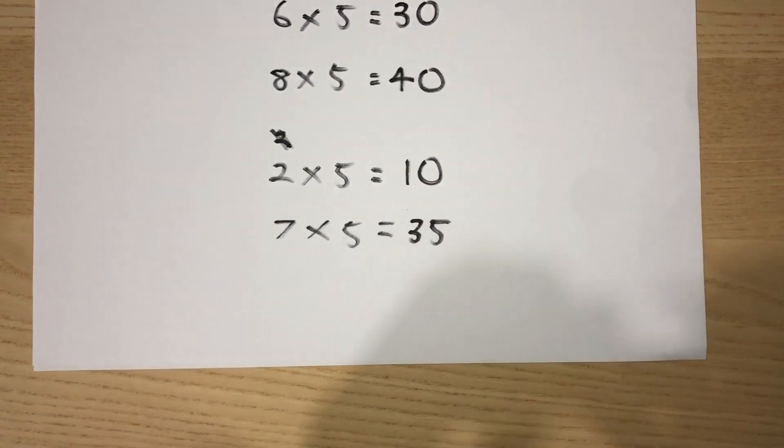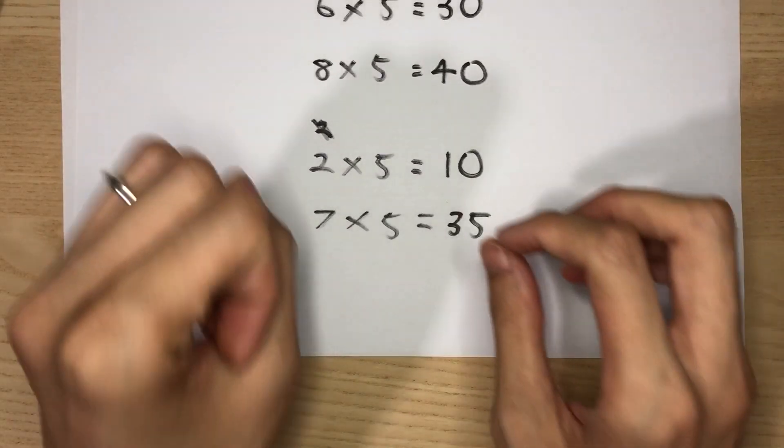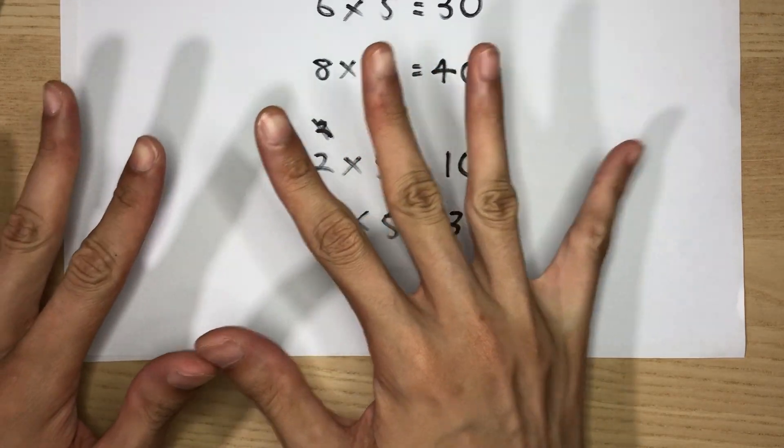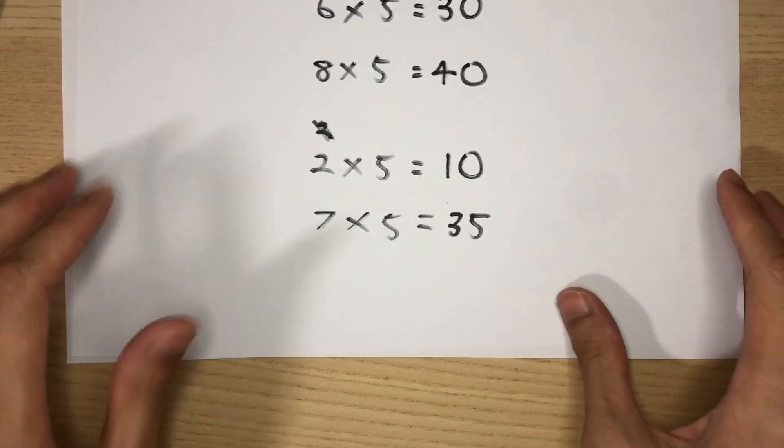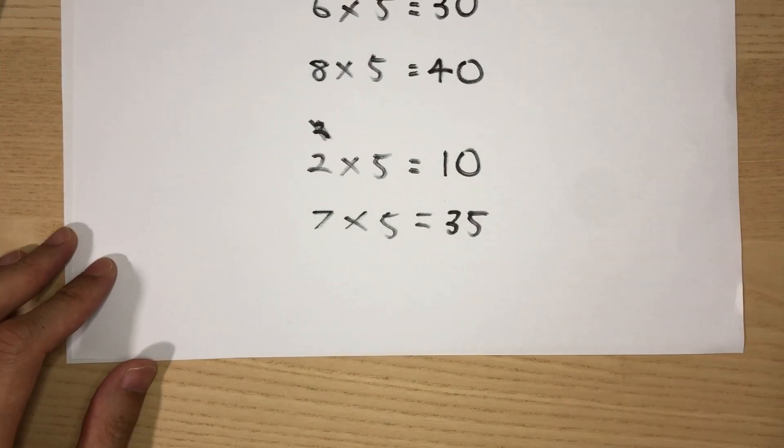The only way to get better at this is to keep practicing. Keep saying 5, 10, 15, 20, 25, 30, 35, 40, 45, 50. The more you do this in your head, the better and faster you will become at these challenges. Alright. Let's move on to the 10 times table.